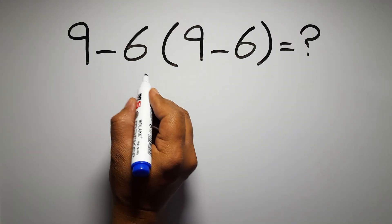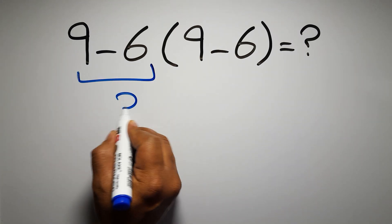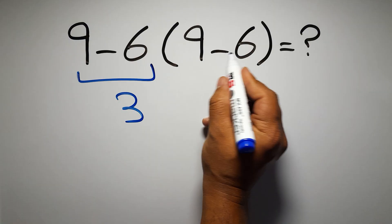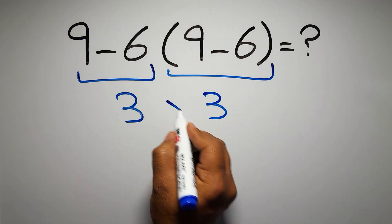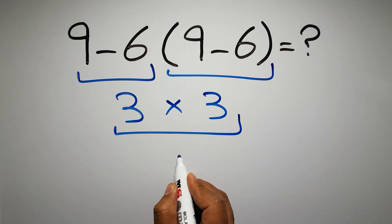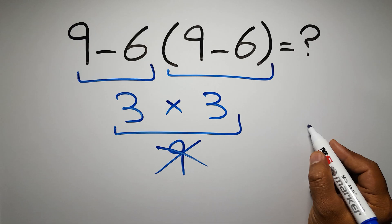9 minus 6 gives us 3, and again here we have 9 minus 6, so 3 times 3 gives us 9. But this answer is not correct because according to the rule of operations, first we have to do parentheses.